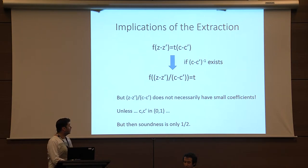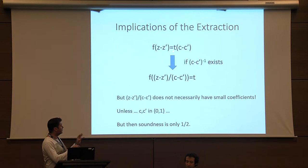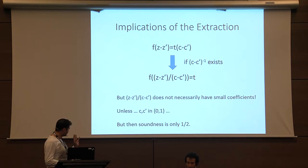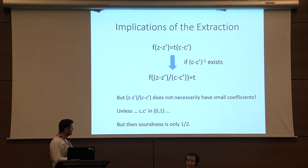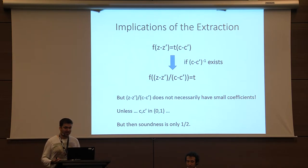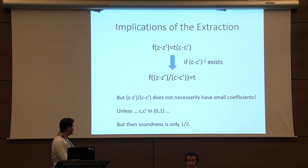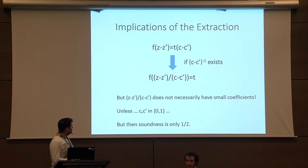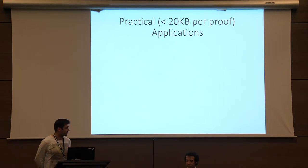There are two solutions. One is to say: I don't care, I'm happy enough with this. If you actually want f(something small) = T, then choose C and C' to be zero or one — in this case C minus C' is going to be one or minus one, the inverse is just one or minus one, and you actually have f(something short) = T. But the problem with this is your soundness is only one half. So there are basically two ways to do zero-knowledge proofs for lattices.